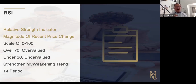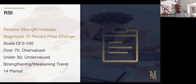So the RSI, as I'm about to show you, runs on a scale from zero to 100. If it is over 70, then it is considered overvalued. In other words, the price is too high relative to its historical metrics.